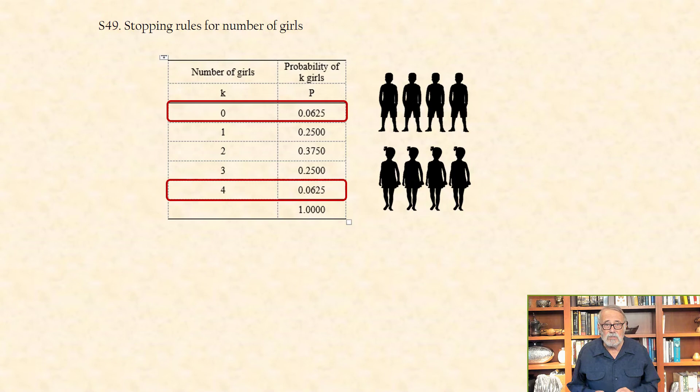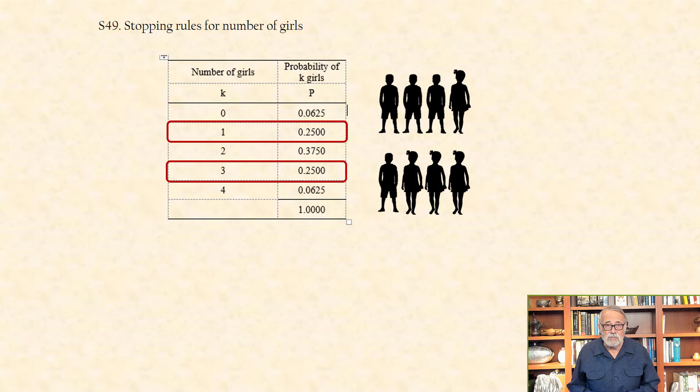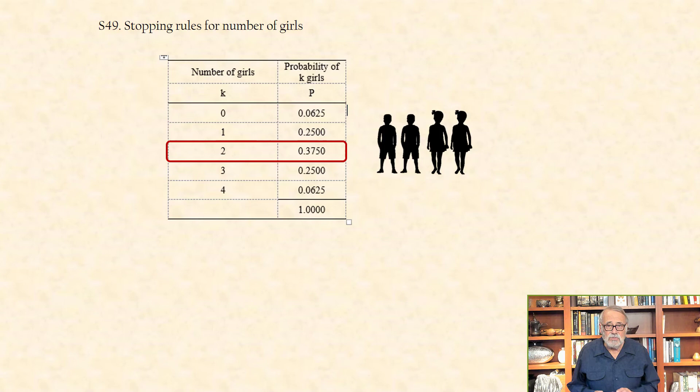The probability of having either one girl or three girls is 0.25, or a quarter. And the probability of having exactly two girls out of four is 0.3750, or a little over one-third.